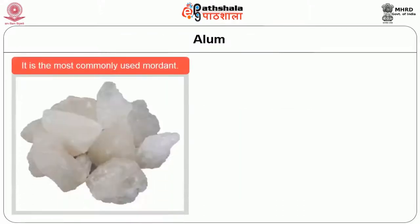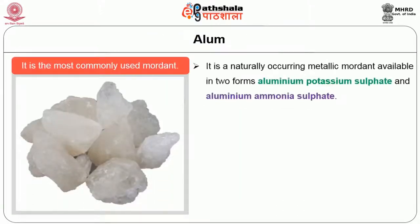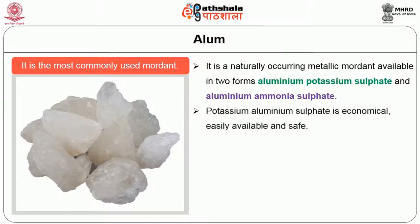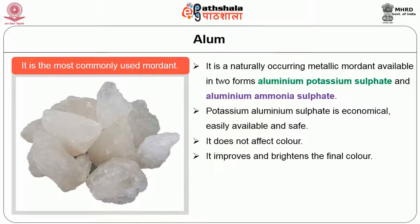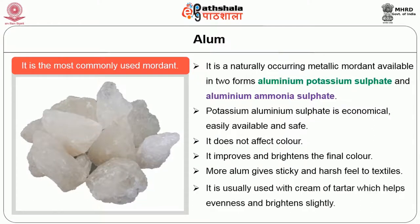Alum is the most commonly used mordant. It is a naturally occurring metallic mordant available in two forms: aluminium potassium sulphate and aluminium ammonia sulphate. Potassium aluminium sulphate is economical, easily available and safe. It does not affect colour and improves brightness and final colour. However, more alum gives a sticky and harsh feel to textiles. It is usually used with cream of tartar, which helps evenness and brightens slightly.